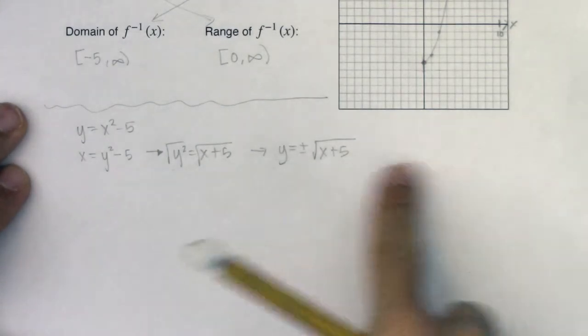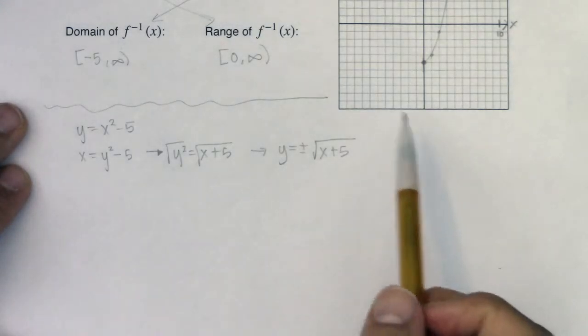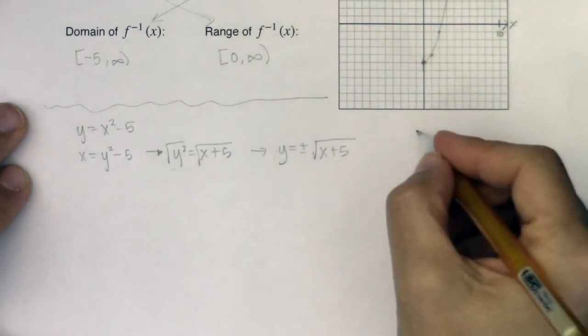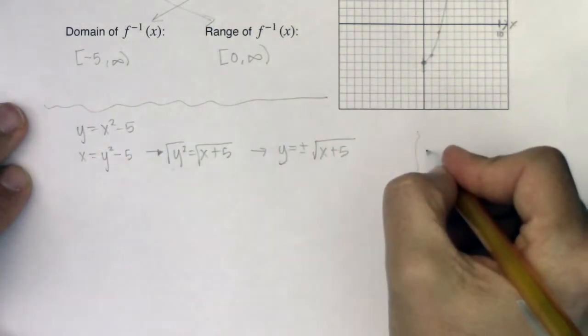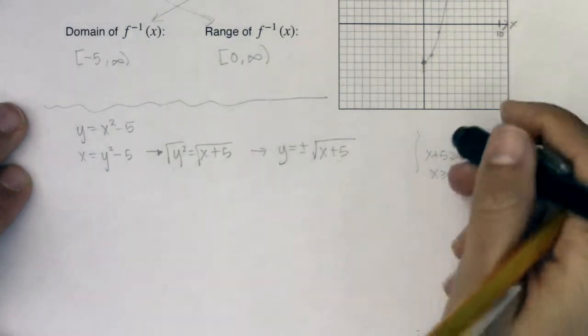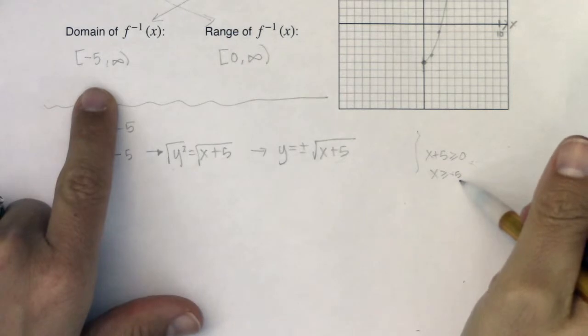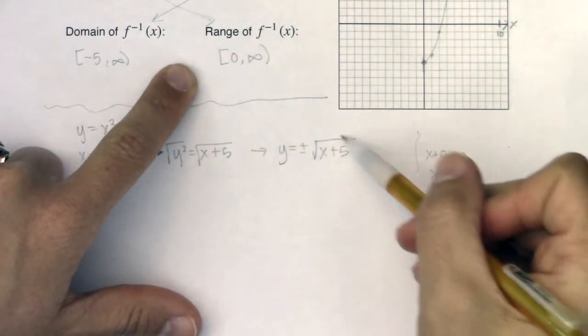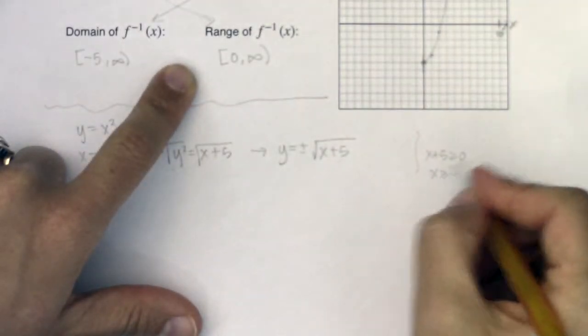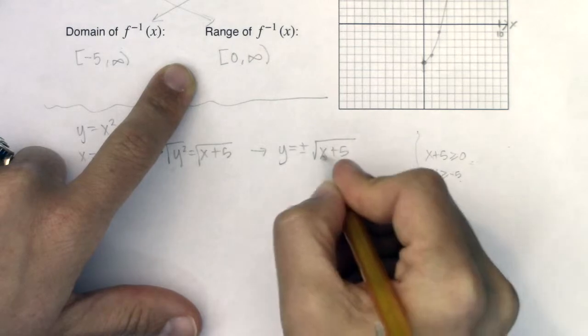Are we going to take the positive square root or the negative square root? We only want one of them. If I took both of them, it would actually give me the full sideways parabola. So let's think about this. We're restricting our domain to [-5, ∞), and that's to account for the fact that x + 5 has to be greater than or equal to 0. I have this domain restriction because x + 5, that radicand, would have to be greater than or equal to 0, so x would have to be greater than or equal to negative 5.